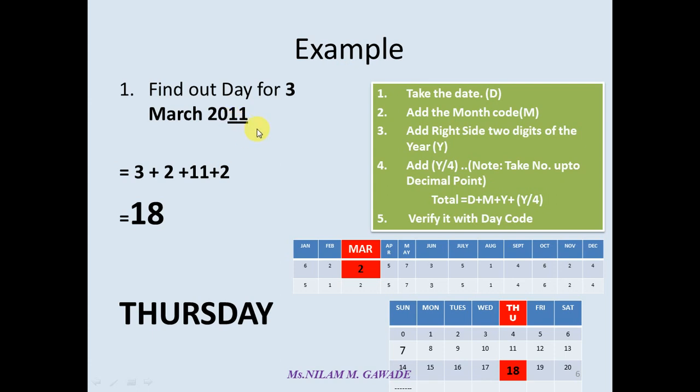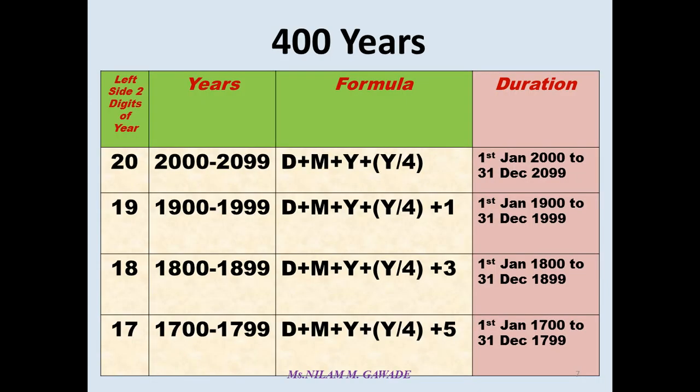Let us see how we can find out calendar for 400 years. So this simple chart I have made for years from 2000 to 2099, that means from first January 2000 to 31st December 2099, we have to use this formula D plus M plus Y plus Y by four. From 1900 to 1999, that is from first January 1900 to 31st December 1999, we have to use this formula, the same formula, but we have to add 1. Similarly for 1800 to 1899, we add 3. And from 1700 to 1799, we have to use this formula by adding 5. By using three tables, that is day code, month code, and this table, you can find out day for any given date.